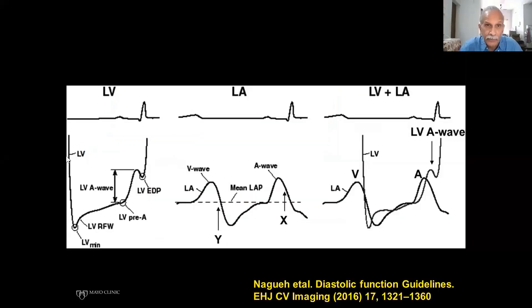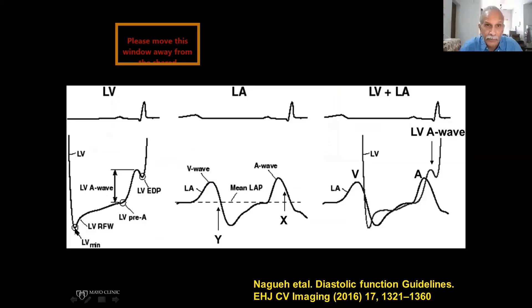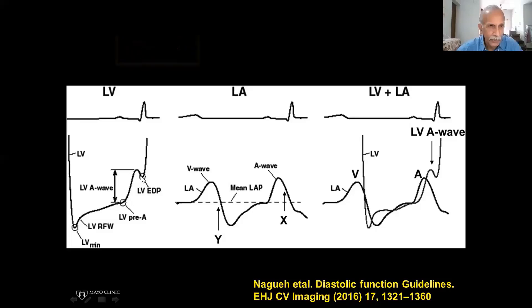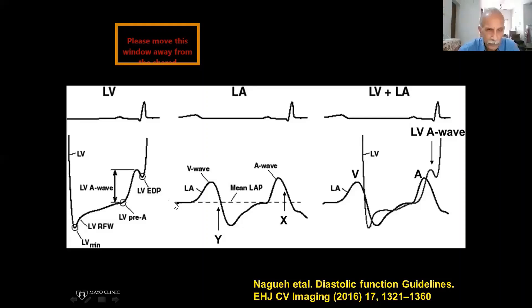Here is a normal LV filling pressure. Rapid relaxation due to active relaxation and the unwinding of the apex causes the pressure to come down — it can even go below zero, negative. The trough can even go beyond the zero line. Then the pressure increases because volume has come in and the pressure is stable. Then until the atrium starts contracting, the pressure rises. When the ventricle is contracting, the atrium is relaxing, so more blood comes in. This is the V-wave. Gradually it accumulates and reaches the peak.